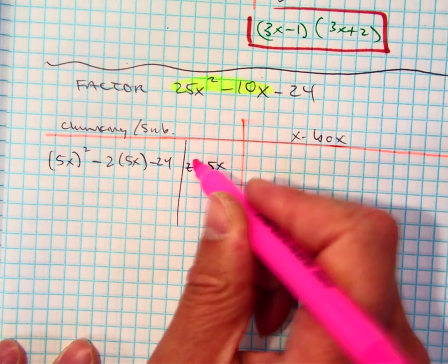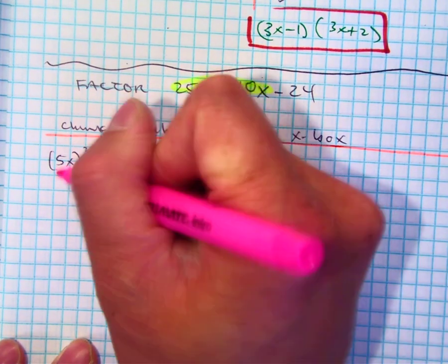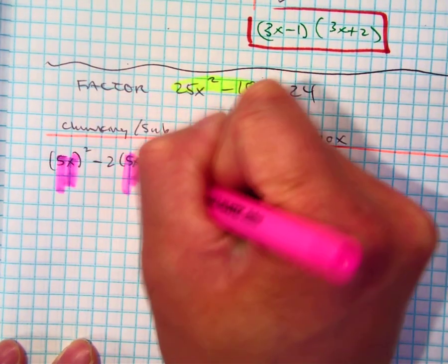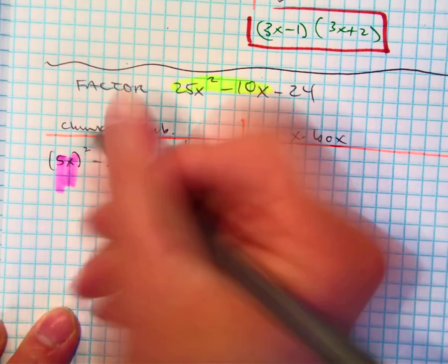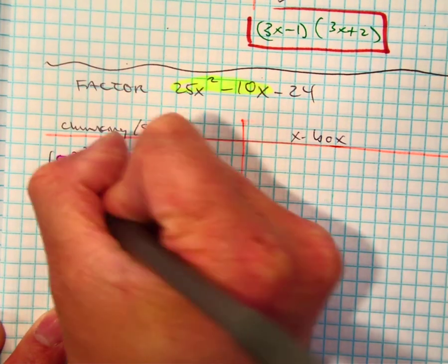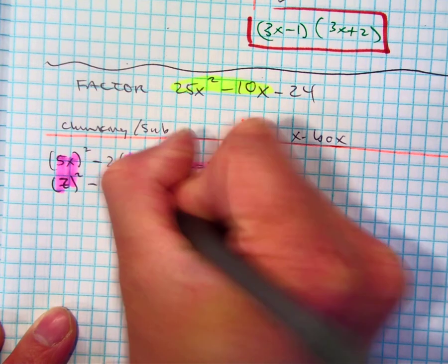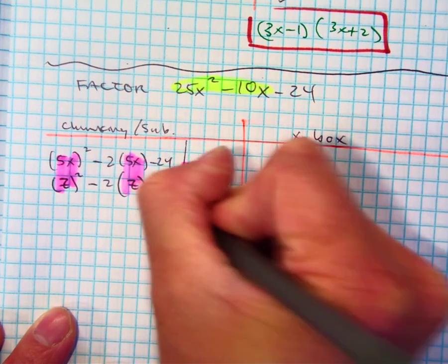And then there's my substitution, right? Every time I see 5x, we can write which variable. So I have z squared minus 2 times z minus 24.